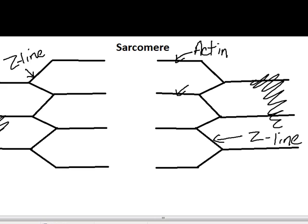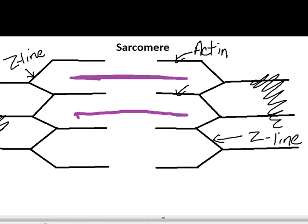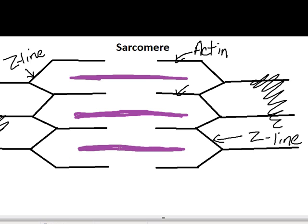We also have a thicker filament, drawn in purple. The thick filament rests right in the middle of the sarcomere. Those thick filaments are called myosin.